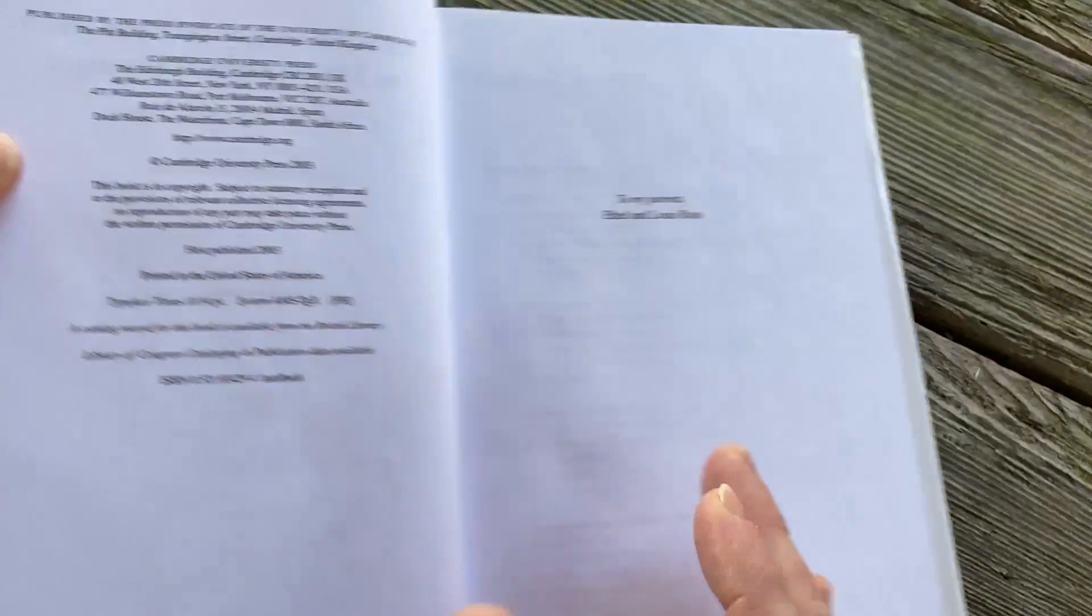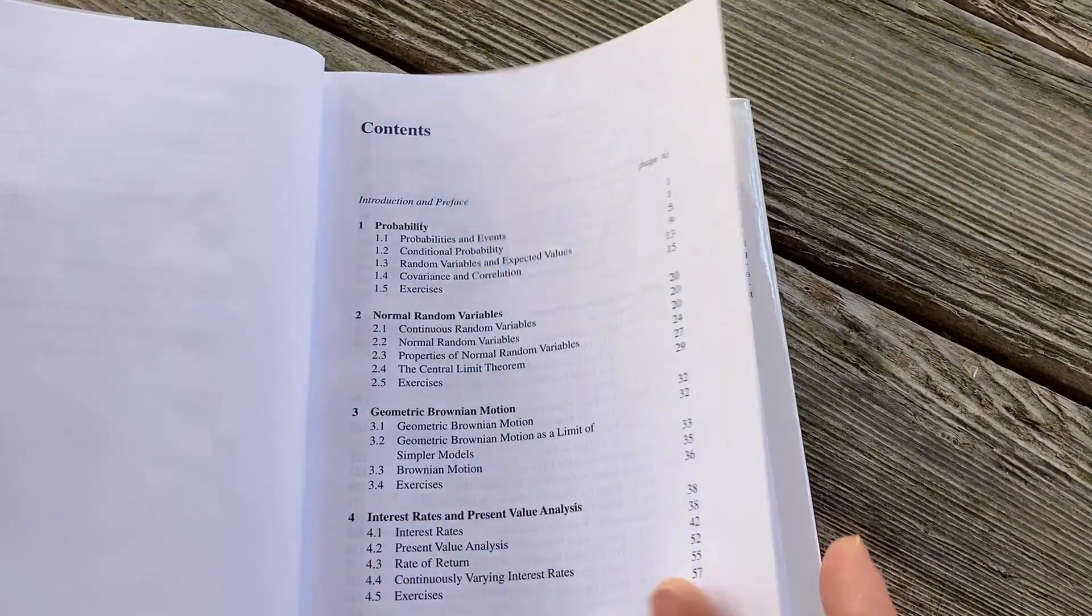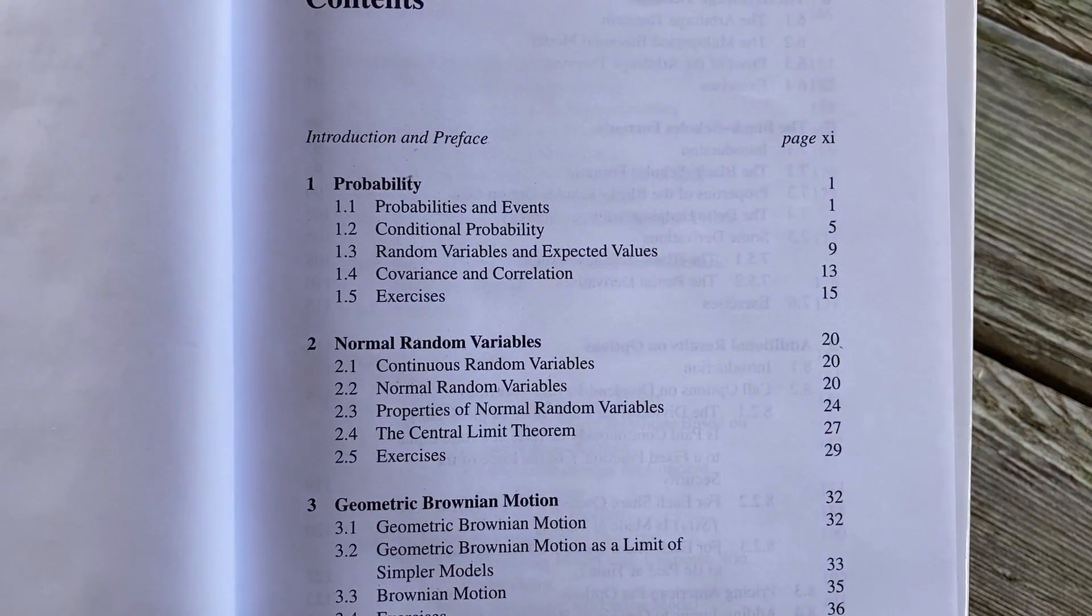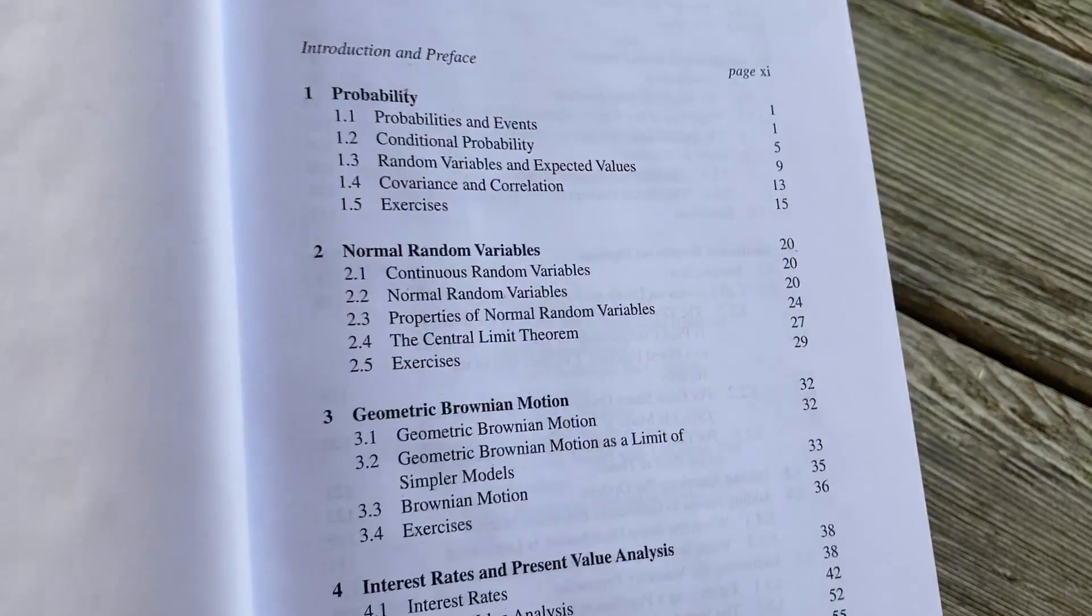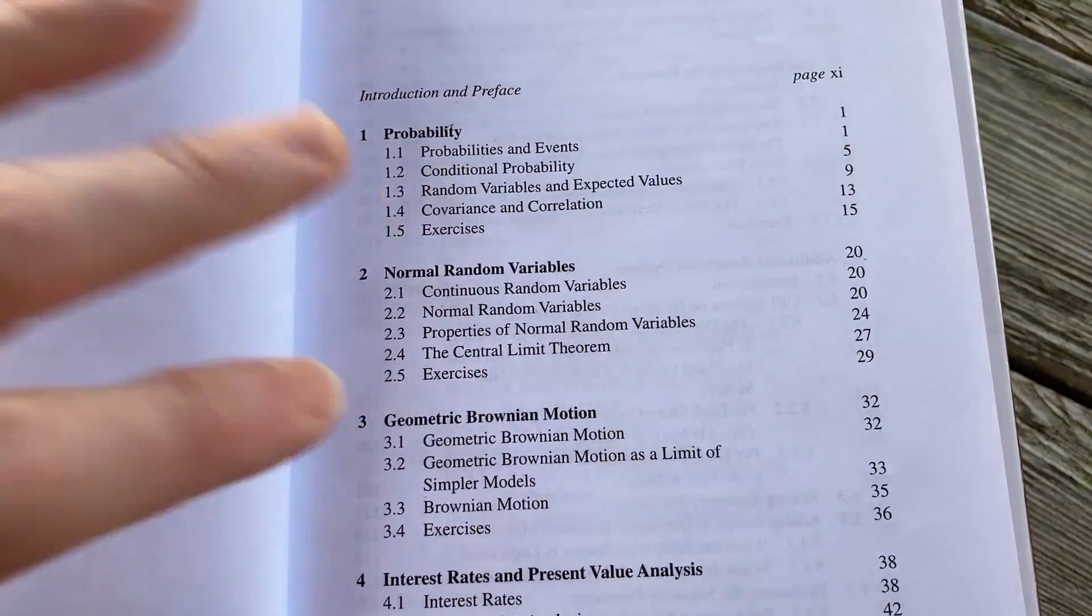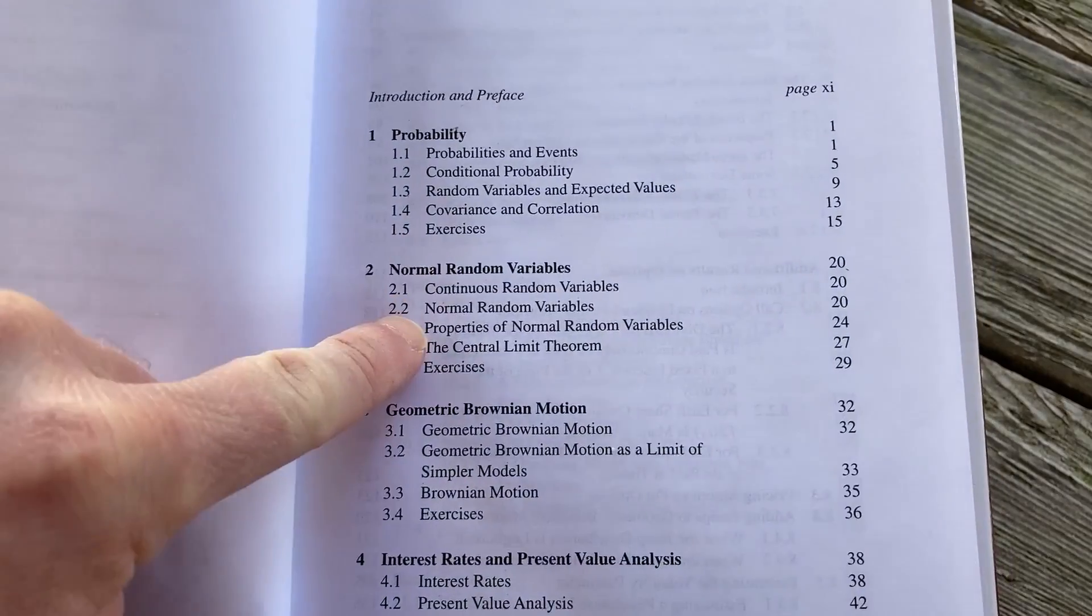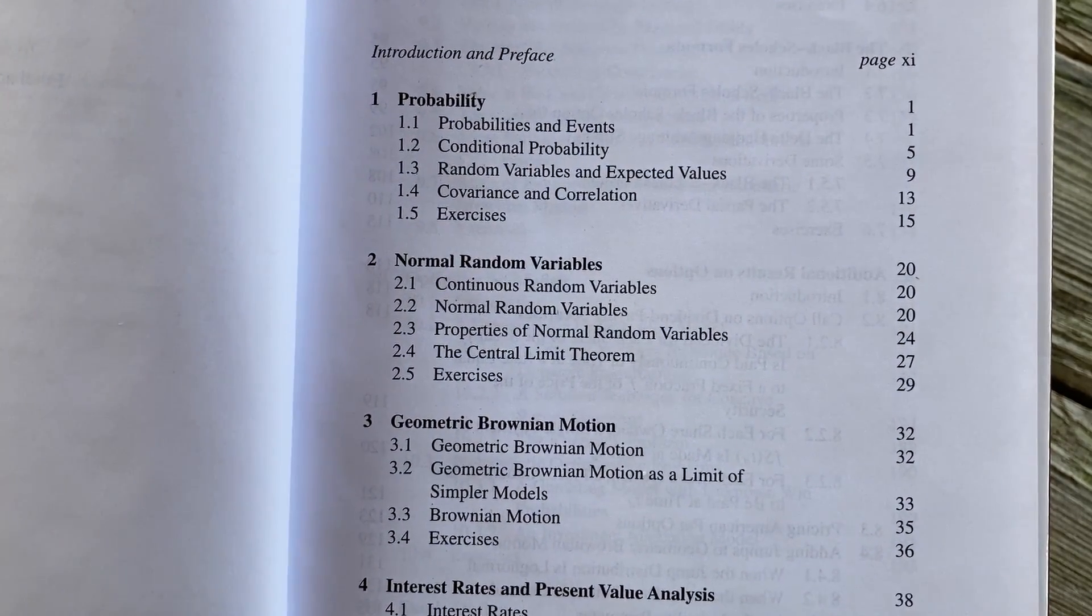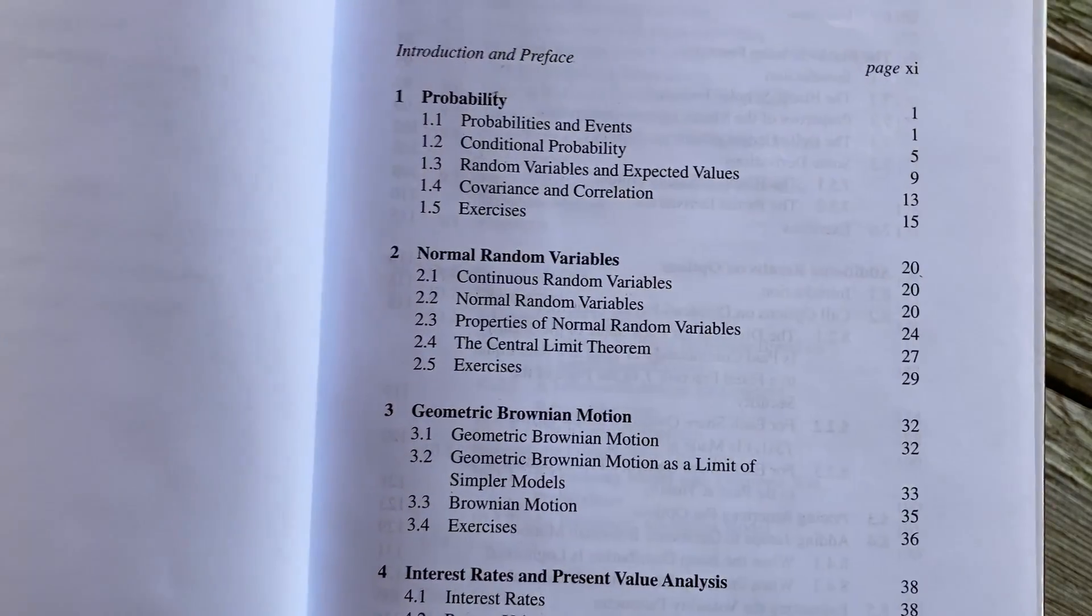Nice book. Nice quality pages. I gotta smell it, sorry. It smells really, really good. So it starts with probability, probabilities and events, conditional probability, random variables and expected values. So these are things that aren't specific to finance. So you're gonna learn core stuff in this book. Covariance and correlation. Then we have normal random variables. Continuous random variables. Properties of normal random variables. The central limit theorem and some exercises.